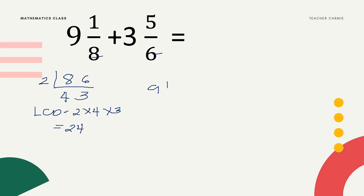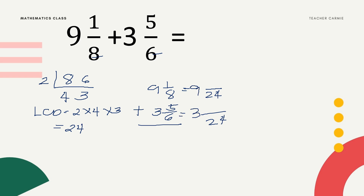Let us change 9 and 1/8 plus 3 and 5/6 using LCD 24. Copy the whole numbers 9 and 3, then change the fractions. 24 divided by 8 equals 3, multiply by 1 equals 3. 24 divided by 6 is 4, times 5 equals 20. Since they are now similar fractions, add the numerators: 3 plus 20 equals 23. Copy the denominator 24.